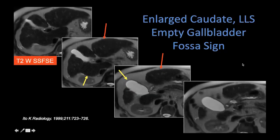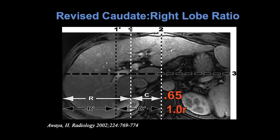Or you may see macronodular changes — large nodules or hypertrophic changes. In this case we have a large caudate, a big left lateral segment, which can often be seen nicely on a coronal image, and the empty gallbladder fossa sign, which is related to the atrophic changes of segment four and segment five of the liver. All of these are felt to be changes that develop because of alterations in portal venous flow. The revised caudate ratio can be helpful — looking at the branch pattern of the first branch of the right portal vein and comparing the caudate to the right hepatic lobe; a ratio of one or greater is helpful to tell whether the patient has cirrhosis.